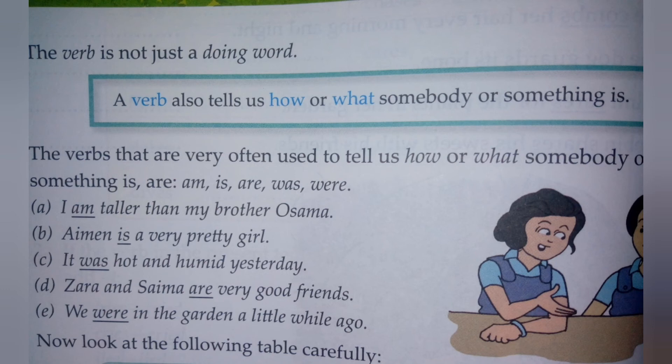For example: 'I am taller than my brother Osama.' Here, 'am' is a helping verb. Should I say 'I taller than my brother Osama'? That is not suitable — we use 'am' as a helping verb to complete the sentence. Same with another example: 'Mona is a very pretty girl.' Without 'is,' saying 'Mona very pretty girl' is not correct. We must say 'Mona is a very pretty girl' because 'is' is a helping verb that completes the sentence. This is a very interesting lecture.